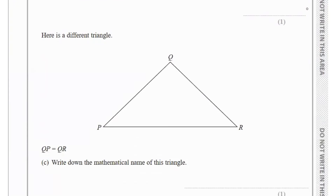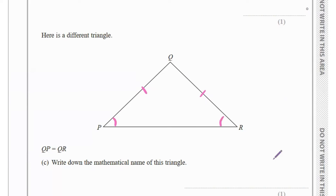The next part shows a different triangle where QP equals QR. We need to write the mathematical name of this triangle. In a triangle, when two lengths are equal, their opposite angles are also equal. That triangle is called an isosceles triangle.